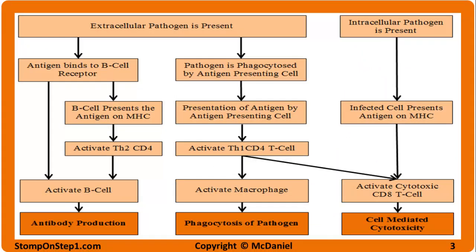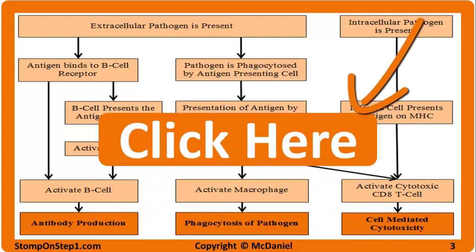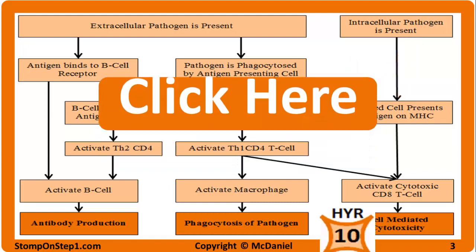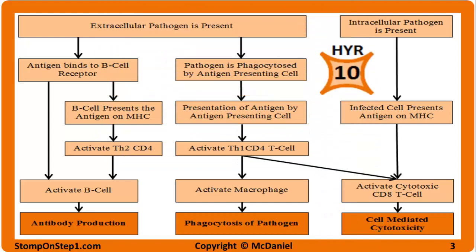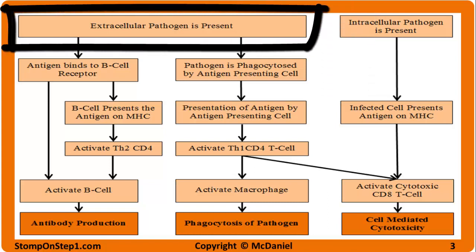We're going to talk in more depth throughout this video about these topics, but I do want to quickly go through this graph here to give you an idea of the big picture. You can go to my website by clicking the orange box to be taken to a webpage that has higher quality pictures of everything you see in the slides. All of the material wrapped up in this flow chart has a high yield rating of 10. The high yield rating is a scale from 0 to 10 that gives you a rough estimate for how important each topic is for the USMLE Step 1 Medical Board Exam.